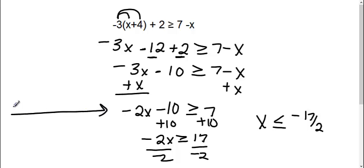I'm going to make my number line here. Negative 17 over 2. We're going to use a bracket, and it says x is less than or equal to. So bracket, less than or equal to, we're going to the left.